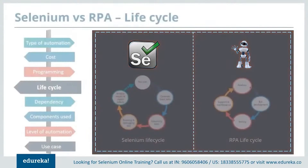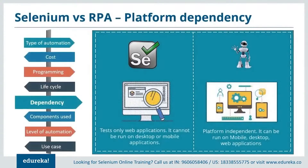What is their lifecycle and how do they differ based on this parameter? The lifecycle of Selenium is a little more complicated compared to that of RPA. Selenium deals with test planning, generating basic test cases, enhancing the cases, running and debugging the test, and analyzing and reporting defects. Whereas RPA deals with just four processes: analysis, development, testing, and support and maintenance.